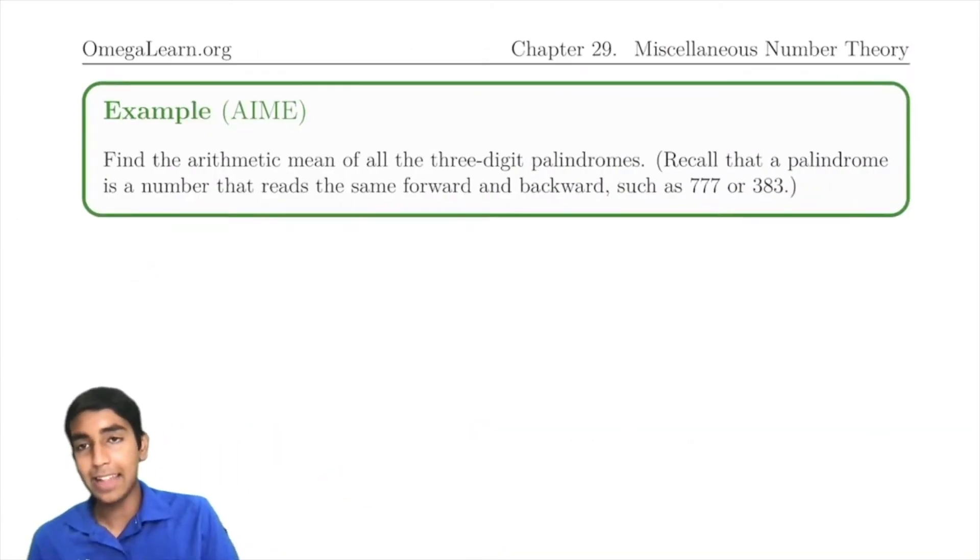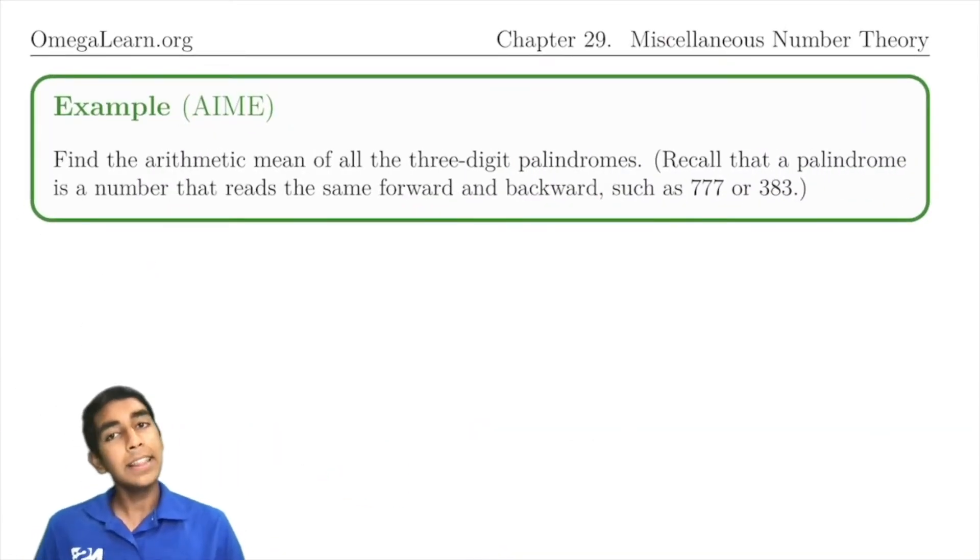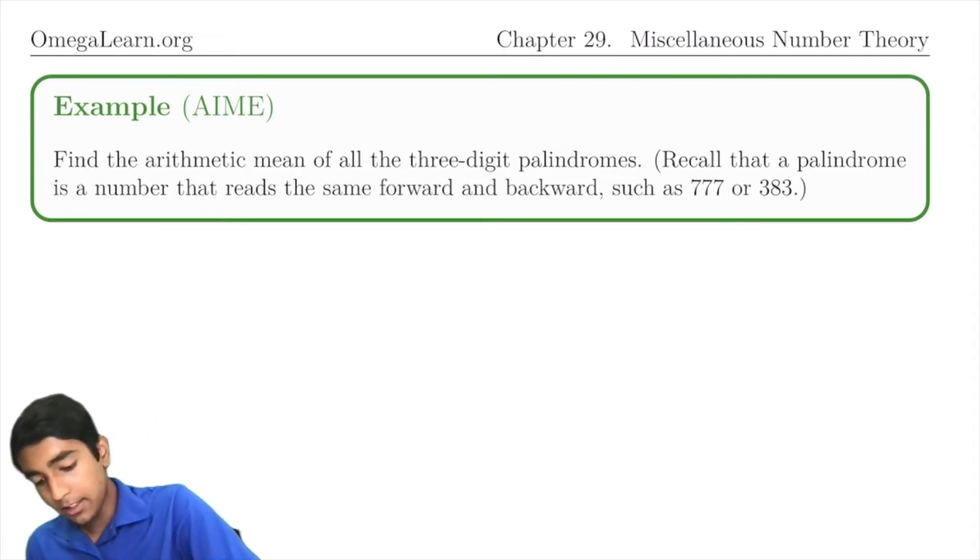Let's take a cool example using palindromes. Find the arithmetic mean of all three-digit palindromes. A palindrome reads the same forward and backward, like 777 or 383. So instead of finding all the palindromes and adding them together, let's find the average for every digit.